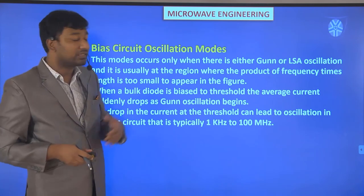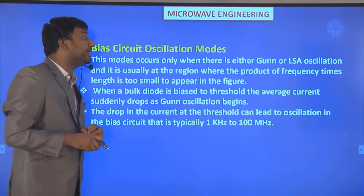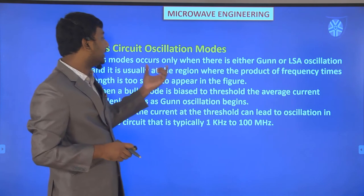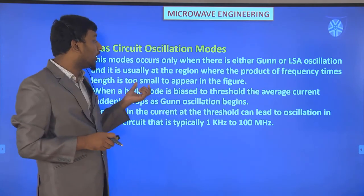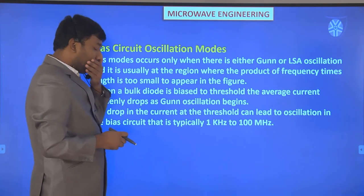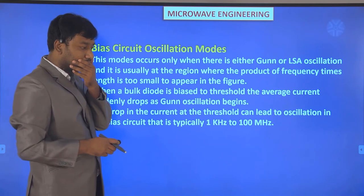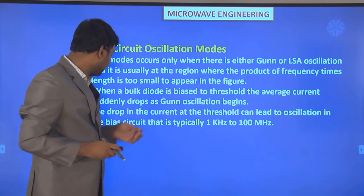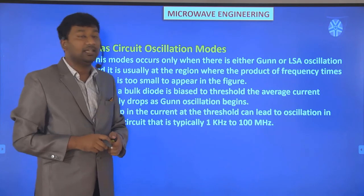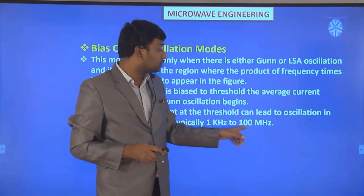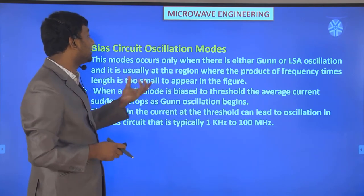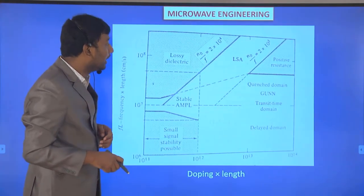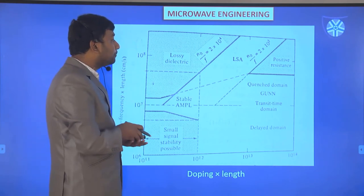The bias circuit oscillation mode is the last mode. It occurs only when there is either Gunn or LSA oscillation and operates in a region where the product of frequency times length is too small to appear in the standard diagram. When a bar diode is biased to threshold, the average current suddenly drops as Gunn oscillation begins. The drop in current at threshold leads to oscillation in the bias circuit, typically at 1 kHz to 100 MHz. This mode is not shown in the figure because its frequency-length product is too small.